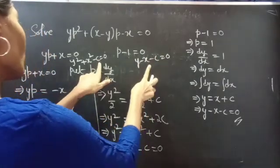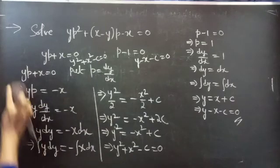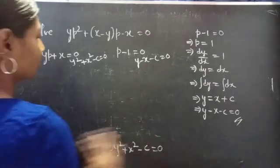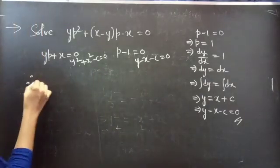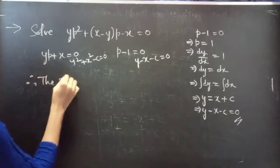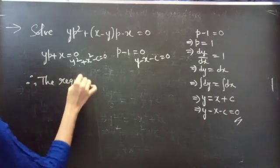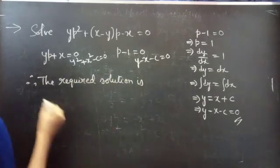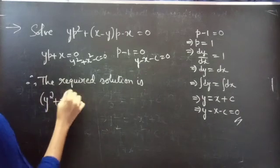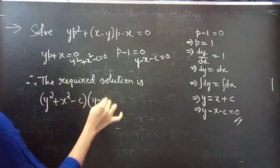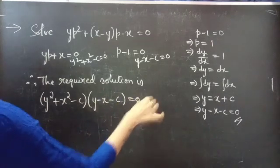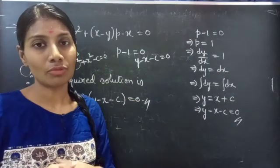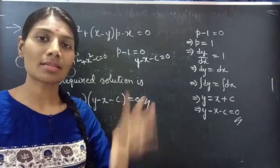Therefore, the combined solution — which is the required solution for the given equation — is: (Y squared plus X squared minus C) into (Y minus X minus C) equals to 0. So, we have seen a problem from Solvable for P in this video. Hope you understand. We will see you in the next video. Until then, bye-bye.